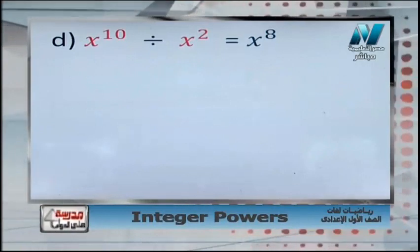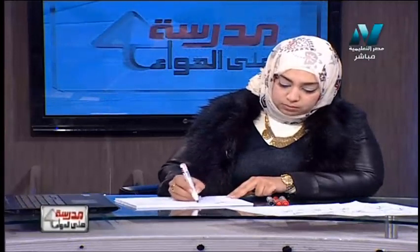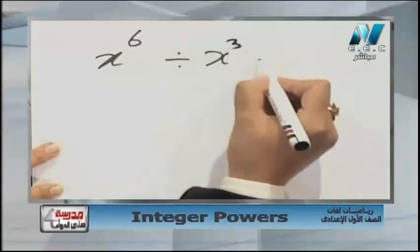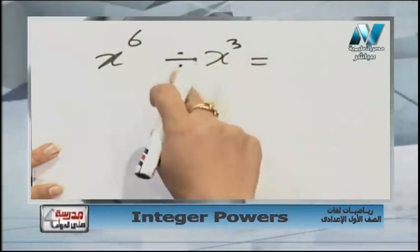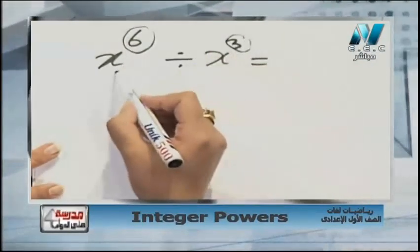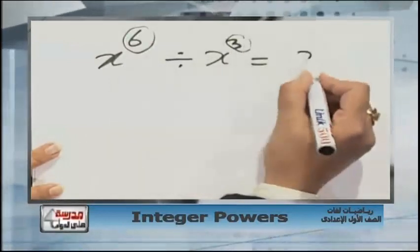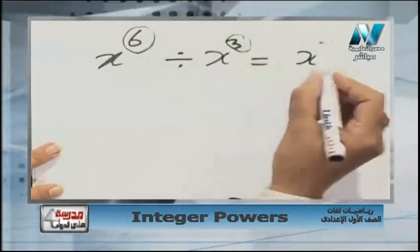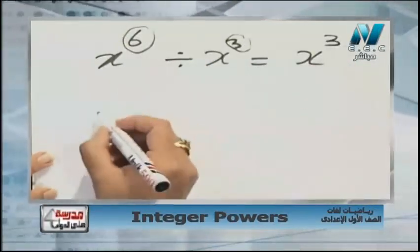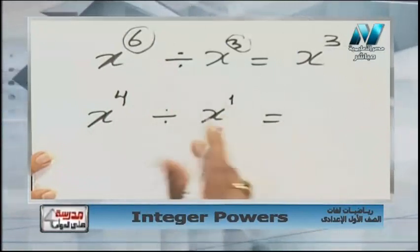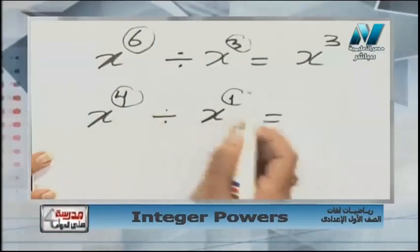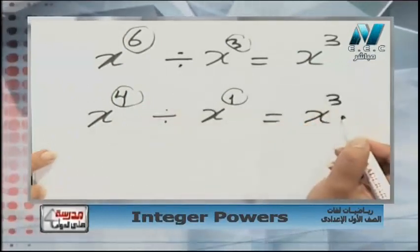New rule: if we have x power 6 divided by x power 3, same base x and x — when we divide same bases, we subtract the powers. So x, 6 minus 3 equals 3, giving x power 3. Another example: x power 4 divided by x — x here has power 1 — subtract the powers: 4 minus 1 equals 3, giving x power 3.